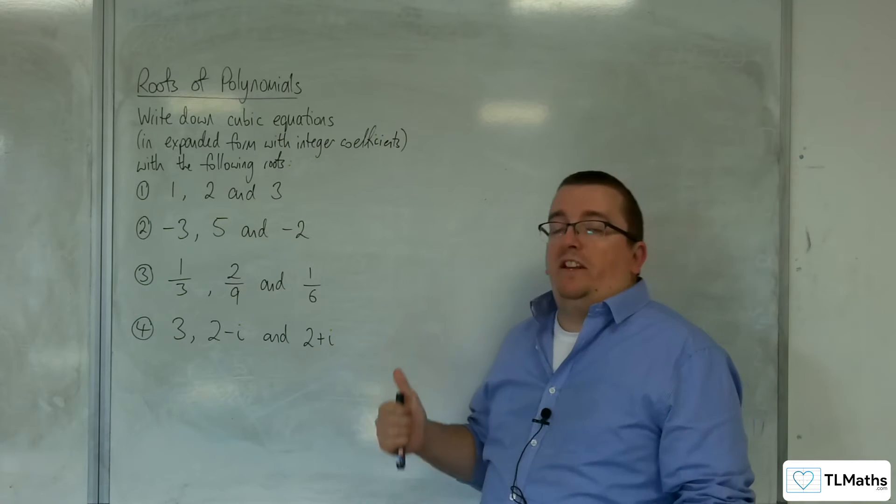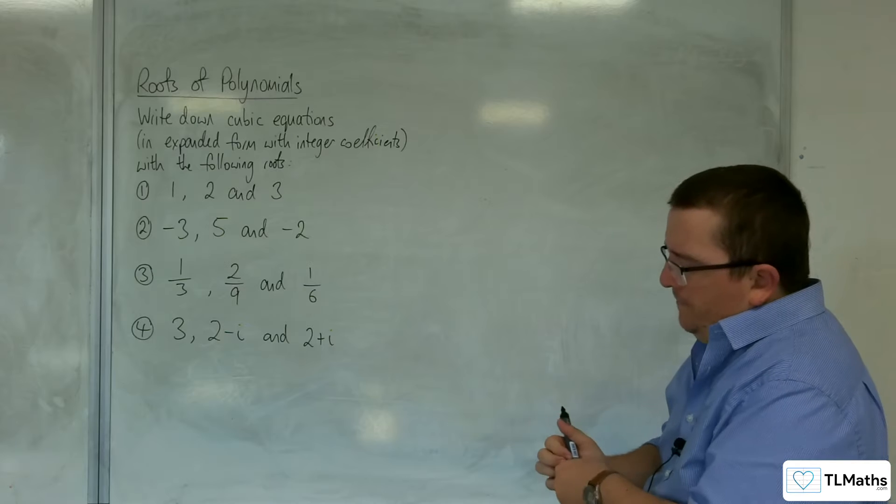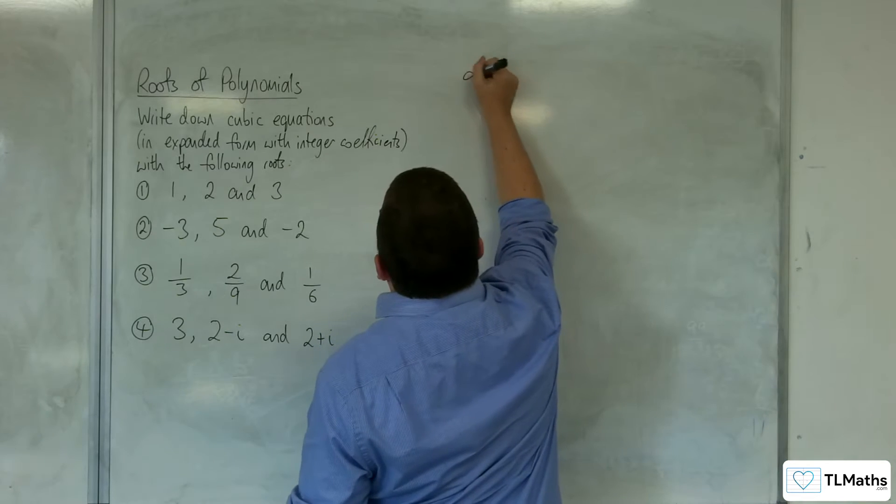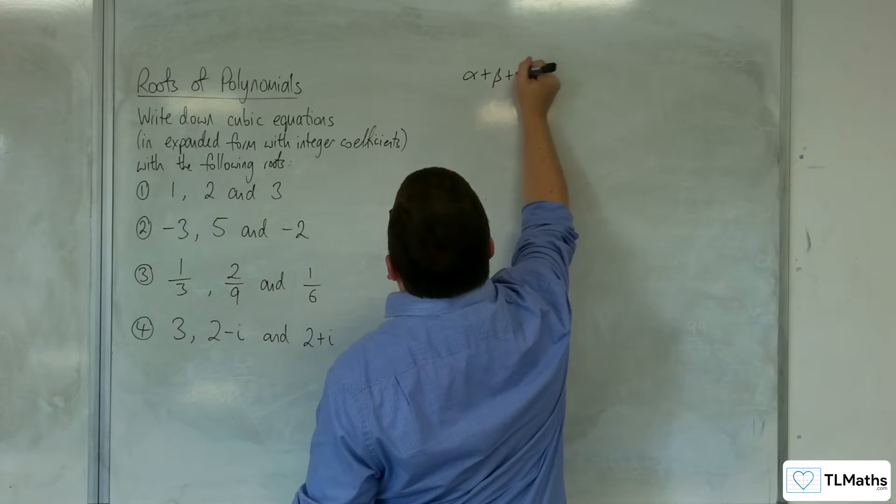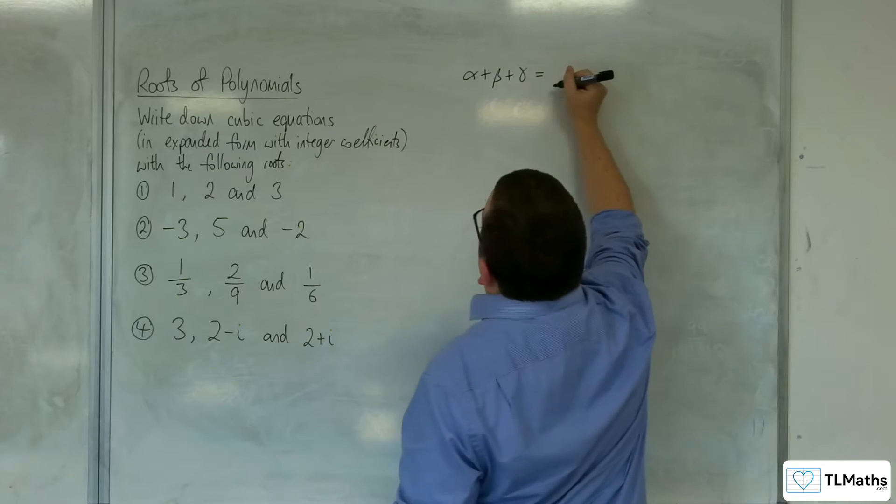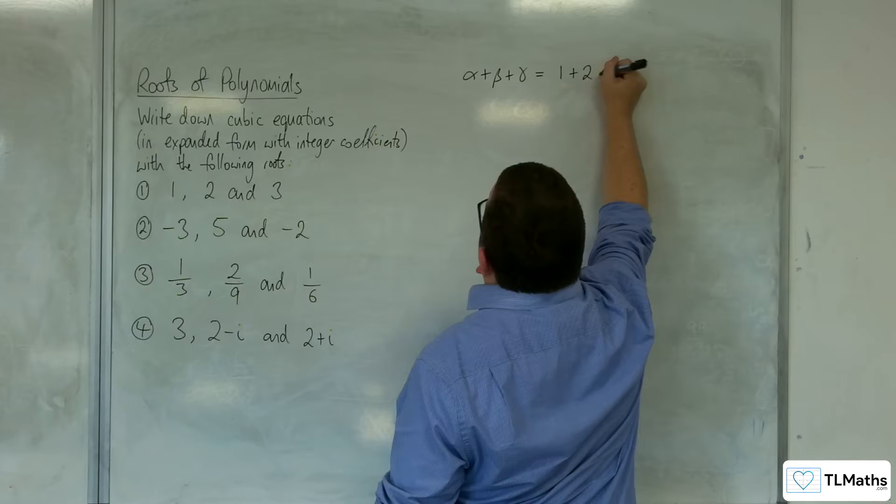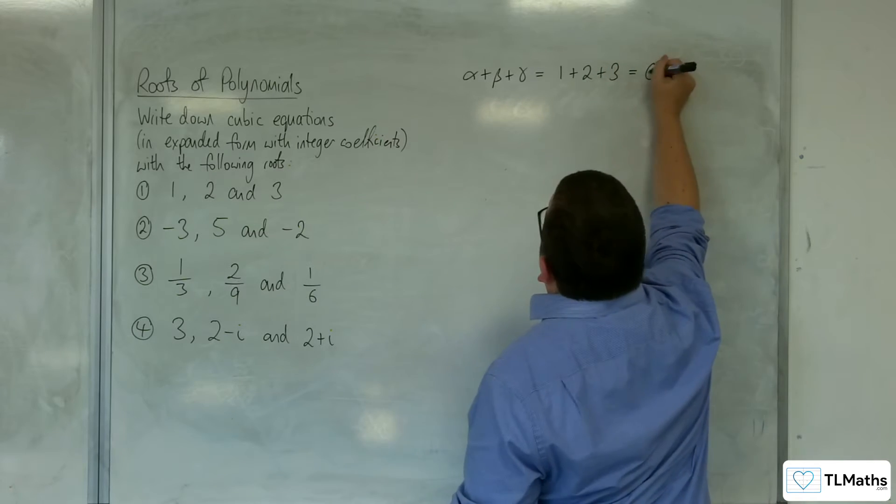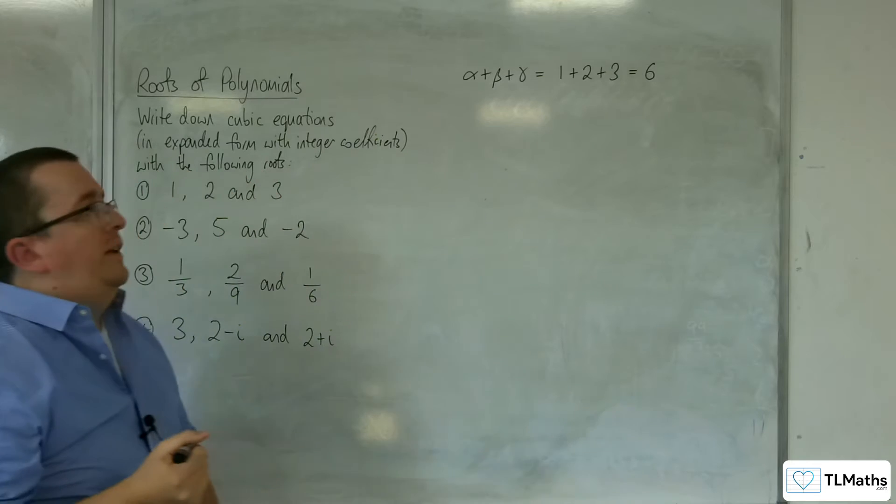We know the roots need to be 1, 2, and 3. So that means that the sum of the roots, alpha plus beta plus gamma, is just going to be equal to 1 plus 2 plus 3, which is clearly just 6. So that one's easy to start off with.